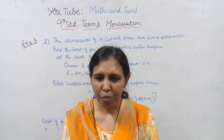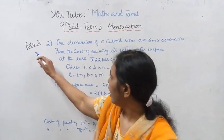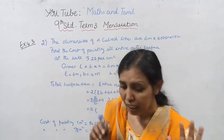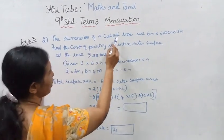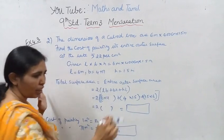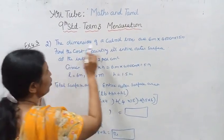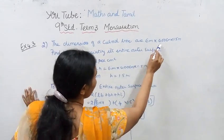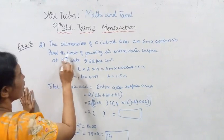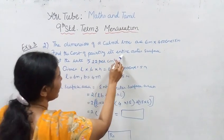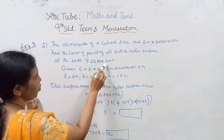Hello students, welcome to Maths and Tamil channel. For 9th standard Term 3 Mensuration, we will see the dimensions of a cuboid box. One box is a cuboid box, 6 meter and 400 centimeter into 1.5 meter. Find the cost of painting its entire outer surface area at the rate of rupees 22 per meter square.